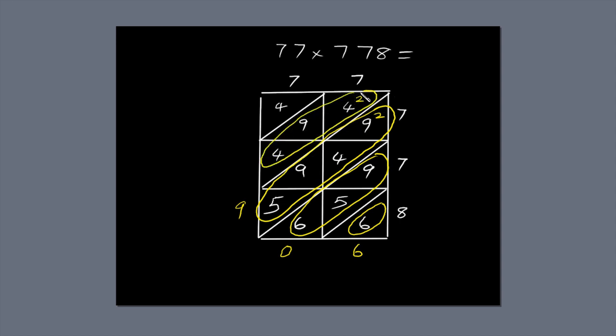Four plus two is six, plus four is ten, plus nine is nineteen. Write the nine next to the diagonal and carry the one over to the next diagonal. One plus four is five. So write five next to the diagonal. Now we just read off the answer.